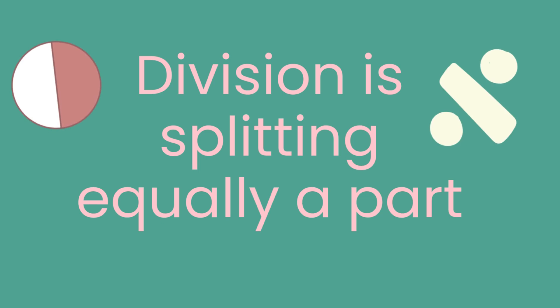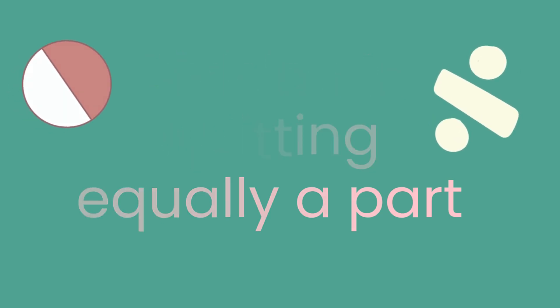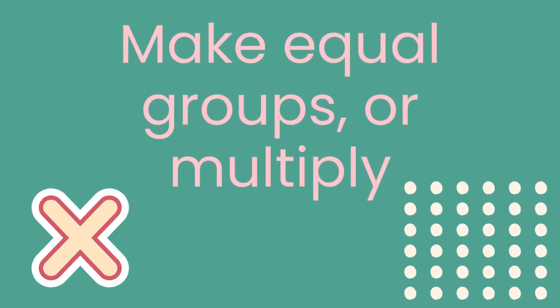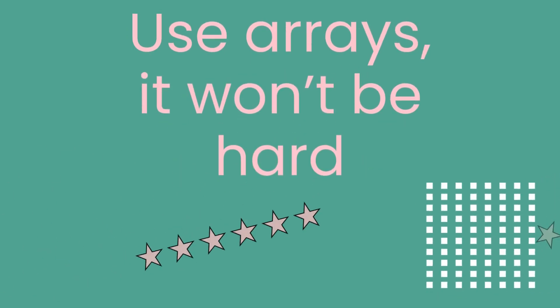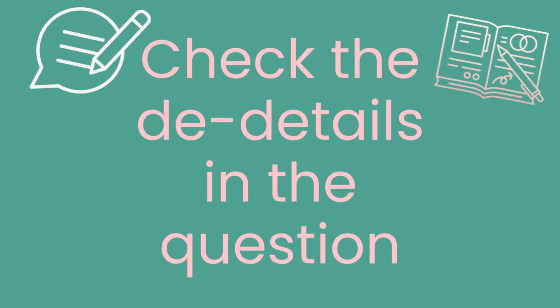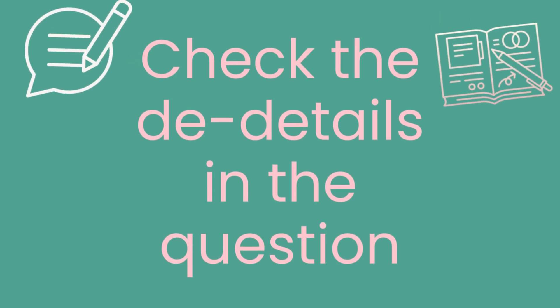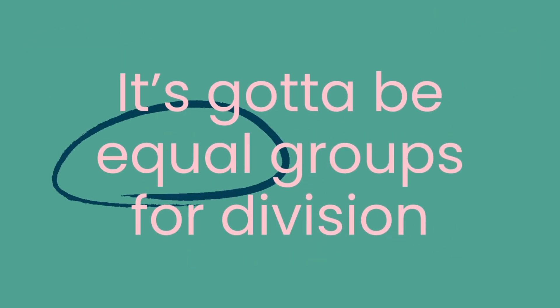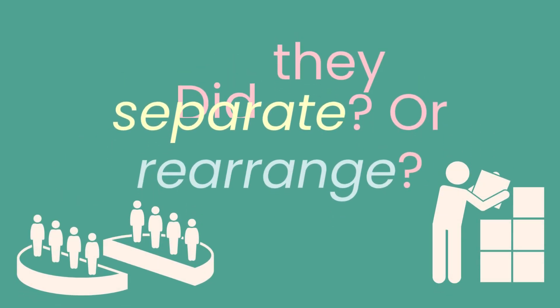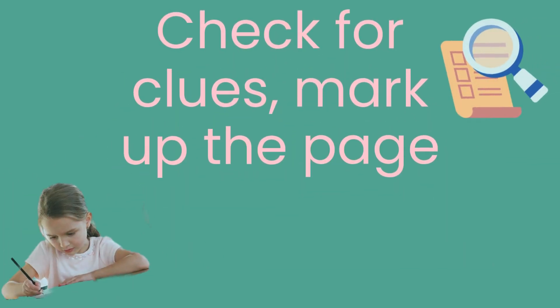Division is splitting equally apart, gotta know the total from the start. Make equal groups or multiply, use arrays, it won't be hard. Check the deep details in the question, it's gotta be equal groups for division. Did we separate or rearrange? Check for clues, mark up the page.